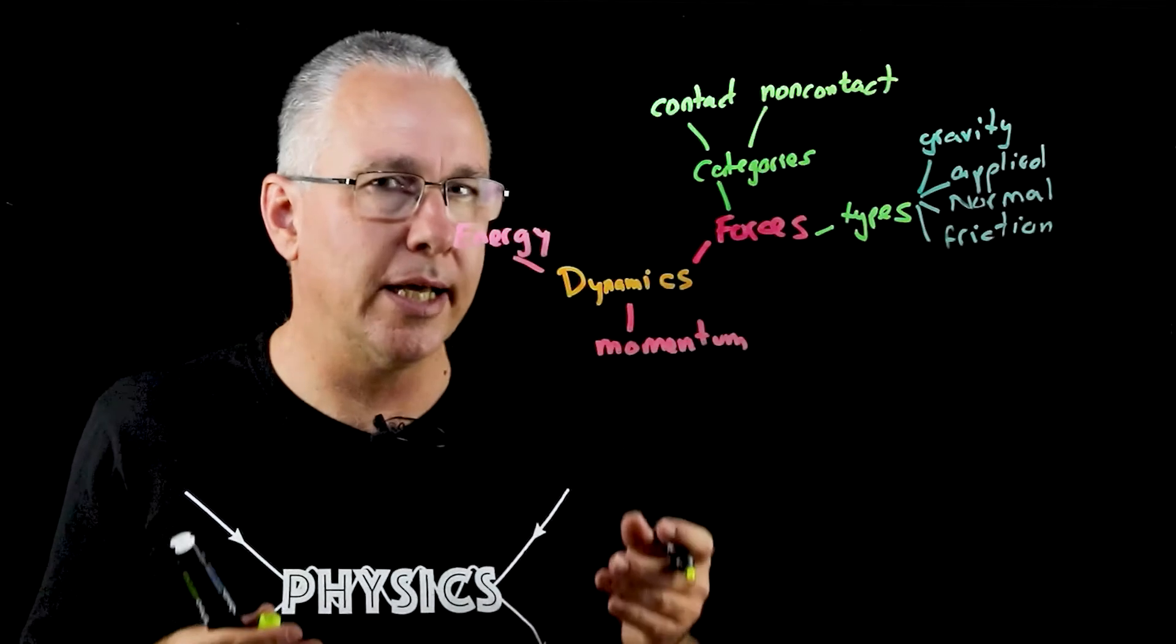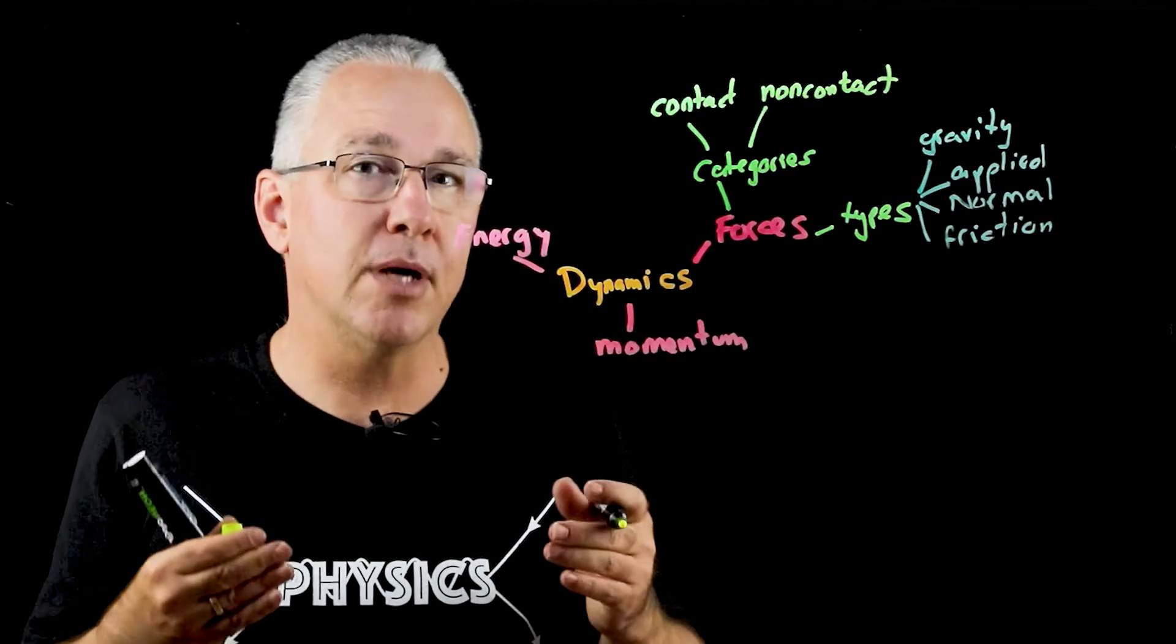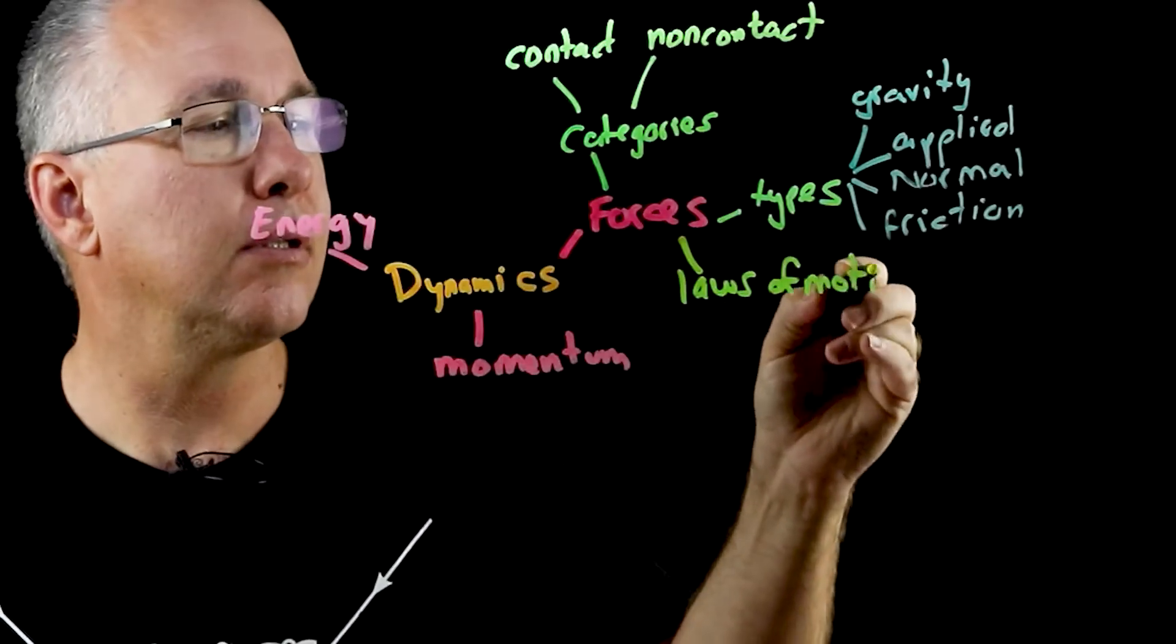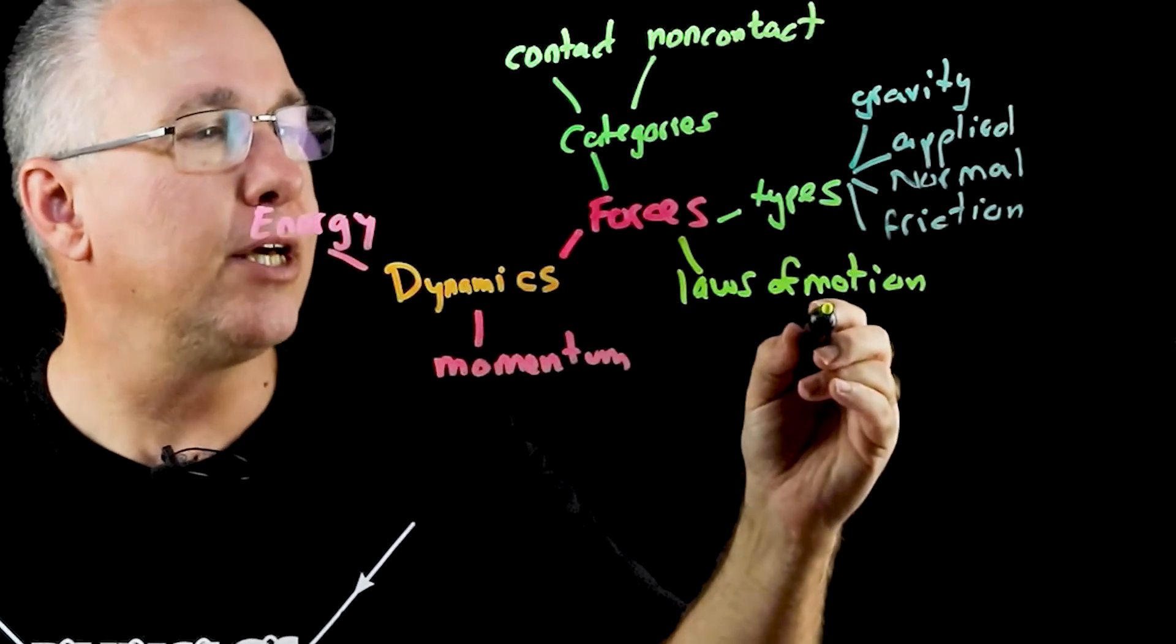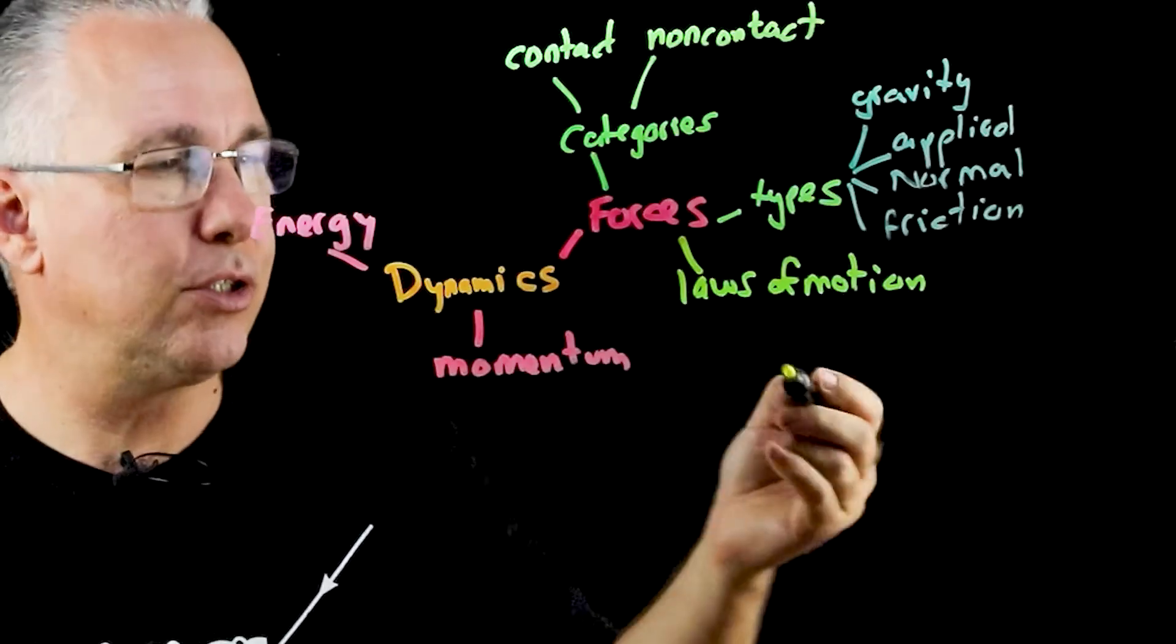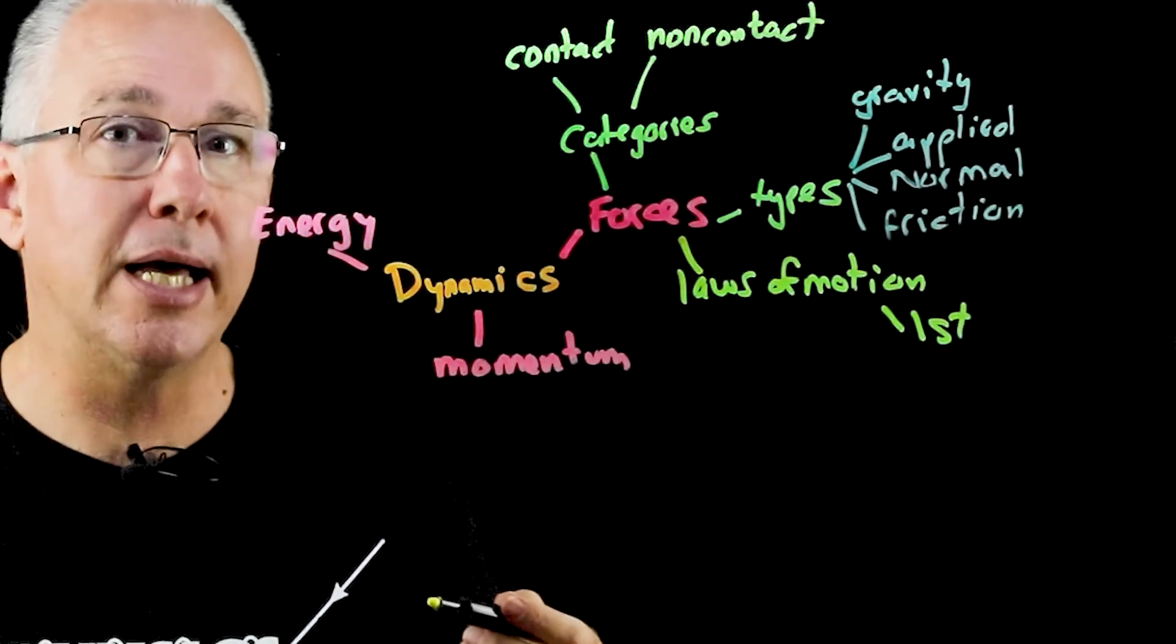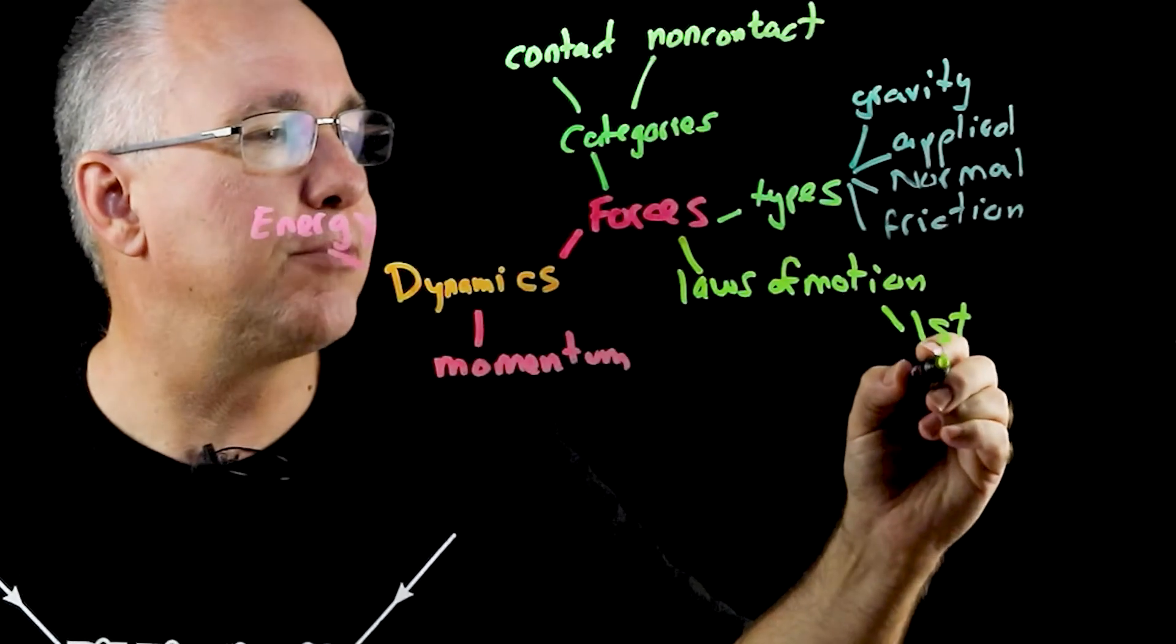And then what we do is we look at the underlying laws that govern these forces, and of course this is what Isaac Newton did in his famous book called Principia, and we are dealing here with what we refer to as the laws of motion. Now there are three laws of motion that you will cover in dynamics. The first law is basically an object will stay at rest or move at constant velocity unless acted on by an external force, and often this is related to the concept of inertia.